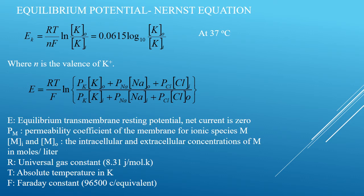The subscript i indicates inside the cell and O indicates outside the cell. When the permeability of the sodium ion and chlorine ion in the Goldman equation is approximately equal to zero, the Goldman equation is reduced to the Nernst equation, and the potential value differs accordingly.